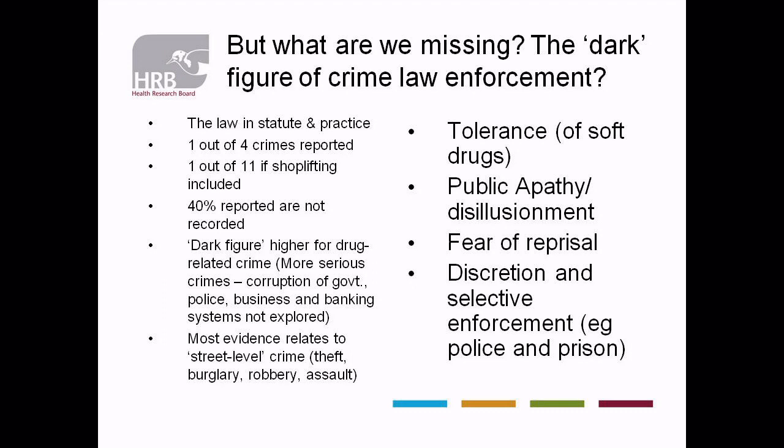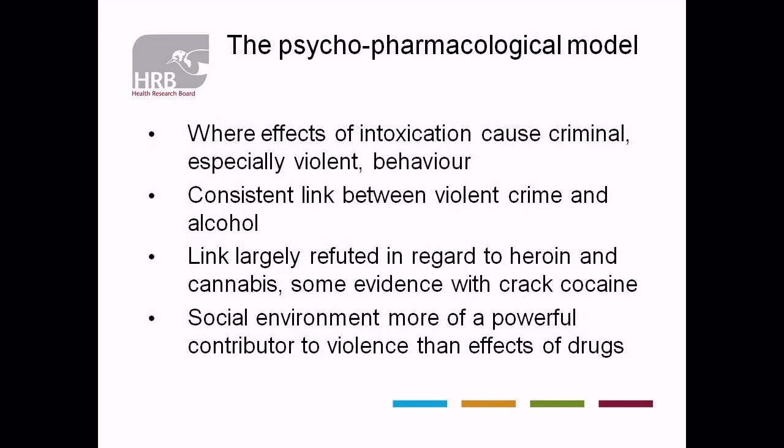There are four dominant models explaining the link between drug use and crime. The first is what we refer to as the psychopharmacological model, which says that there is something within the property of the substance that leads to offending behaviour — intoxication, where it might cause criminal, especially violent behaviour. Research has shown a very strong connection between offending behaviour and the consumption of alcohol — a consistent association between violent crime and alcohol. But the link between offending behaviour and particularly violent crime has been refuted with regards to heroin and cannabis. It is the social environment and context in which drugs are used that is a much more important indicator of violence than the psychopharmacological effect of the substances themselves.